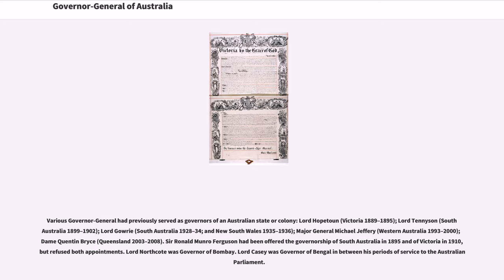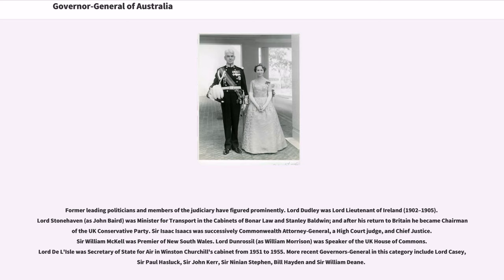Various Governors-General had previously served as governors of an Australian state or colony: Lord Hopetoun (Victoria, 1889–1895), Lord Tennyson (South Australia, 1899–1902), Lord Gowrie (South Australia, 1928–34, and New South Wales, 1935–1936), Major General Michael Jeffery (Western Australia, 1993–2000), and Dame Quentin Bryce (Queensland, 2003–2008). Sir Ronald Munro Ferguson had been offered the governorship of South Australia in 1895 and of Victoria in 1910, but refused both. Lord Northcote was governor of Bombay. Lord Casey was governor of Bengal between his periods of service to the Australian Parliament. Former leading politicians and members of the judiciary have figured prominently.